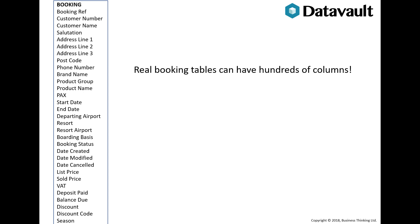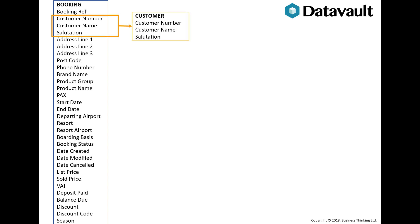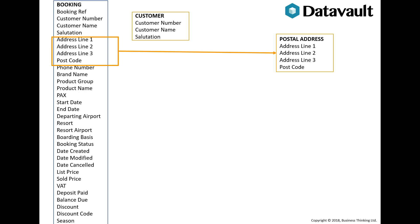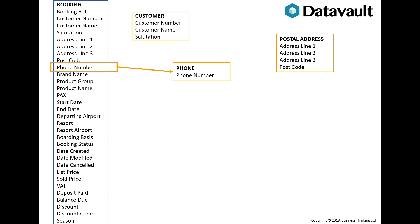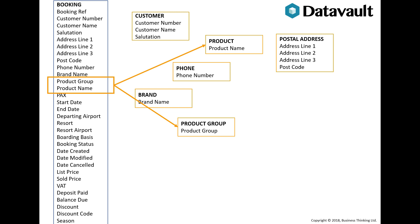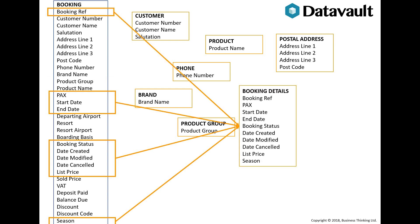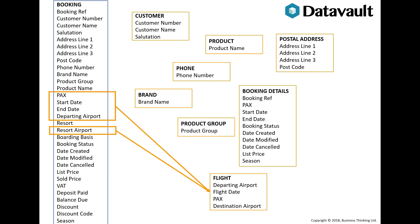Here's a mocked-up booking table. In reality, booking tables can have hundreds of columns. This booking table has some customer information, some address information, a phone number, information about the brand selling the holiday, product and product group information, booking details, status and dates, and flight information.